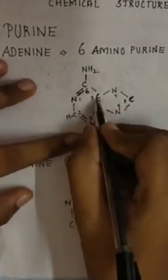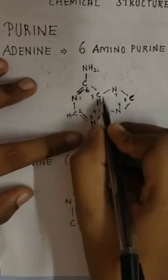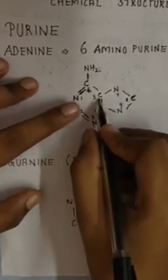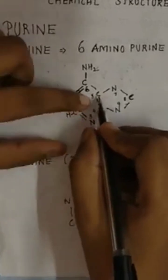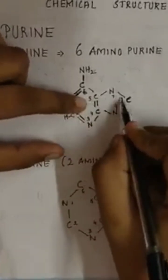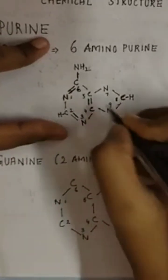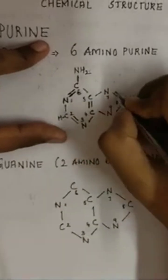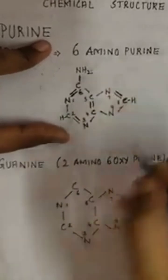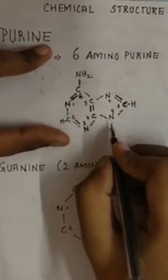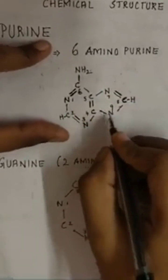For this carbon: 1, 2, 3, and 4 — it is okay. For this nitrogen: 1, 2 — we need another bond. And for this carbon: 1, 2 — we need another 2 bonds, so I'm going to add H and another bond over here. And for this nitrogen, we will complete its bond as well.